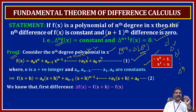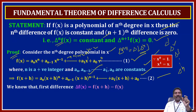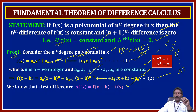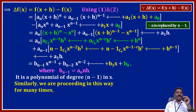Replace x by x plus h in equation 1. So f of x plus h is equal to a_n · (x+h)^n plus a_(n-1) · (x+h)^(n-1) plus and so on, a_1 · (x+h) plus a_0, denoted by equation 2, where h is the interval of differencing. We know the first difference forward difference operator: delta f of x is equal to f of x plus h minus f of x, where h is the interval of differencing.